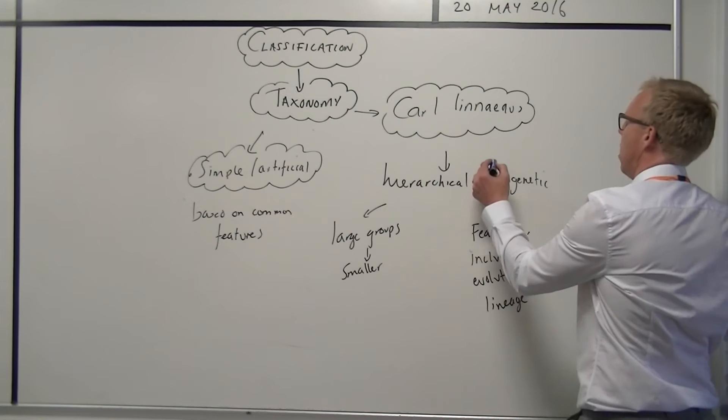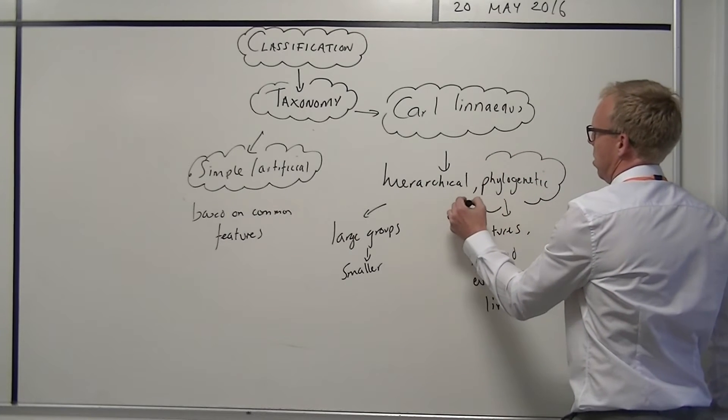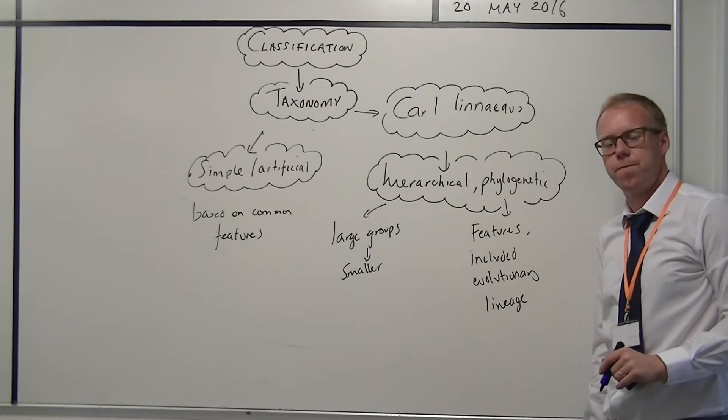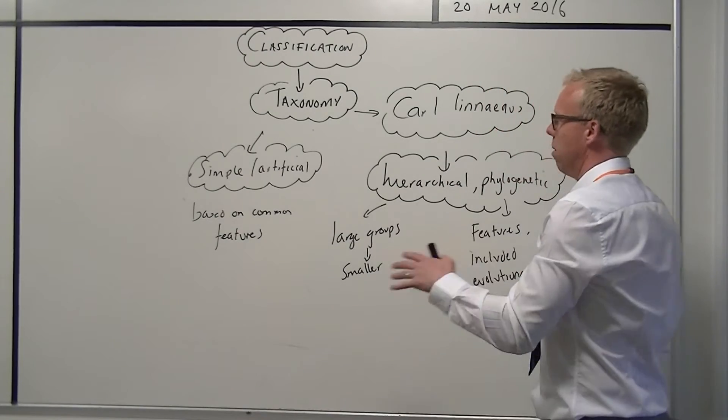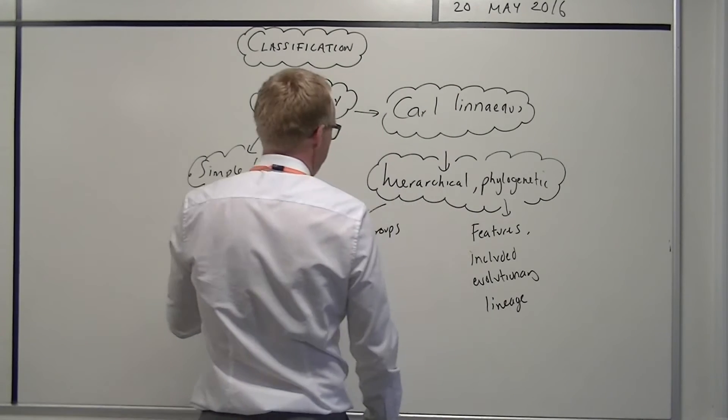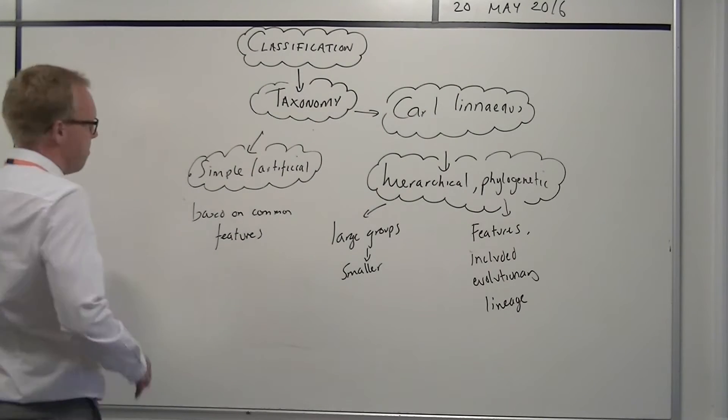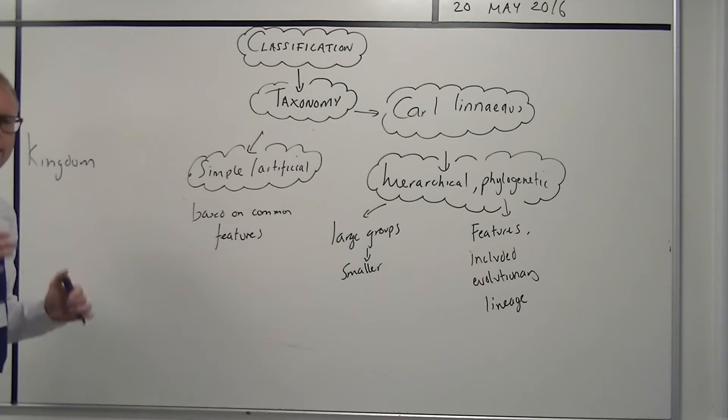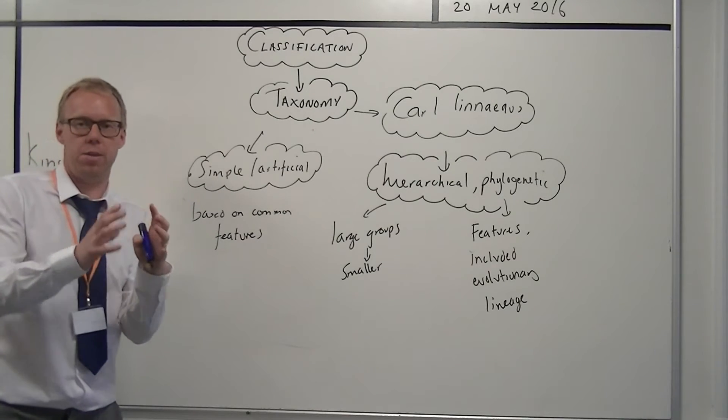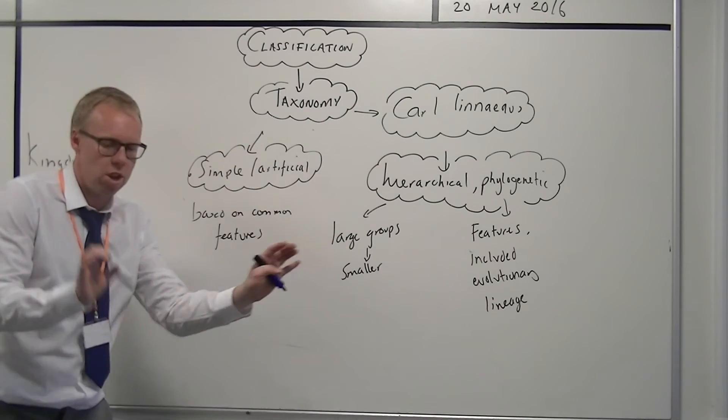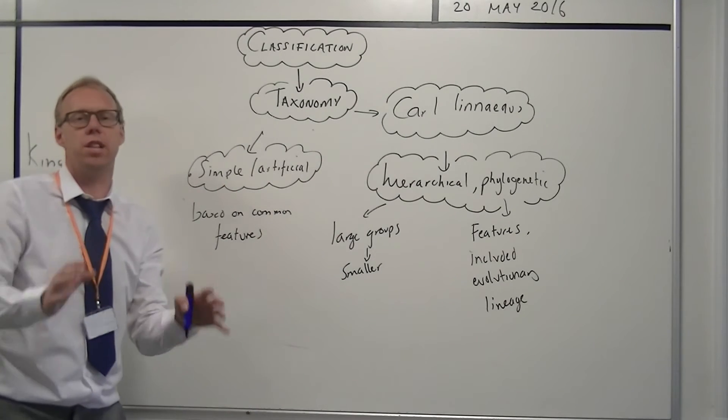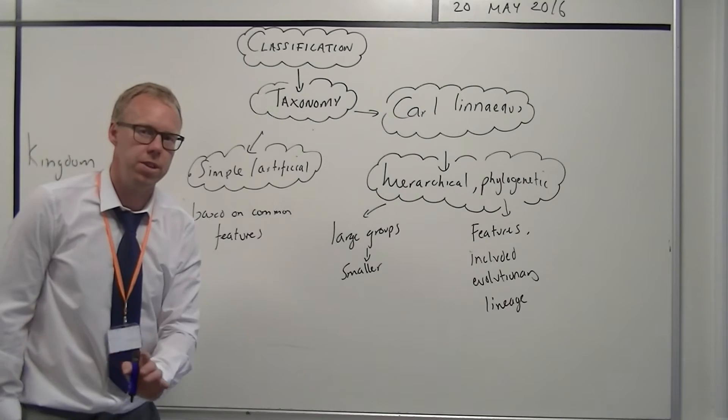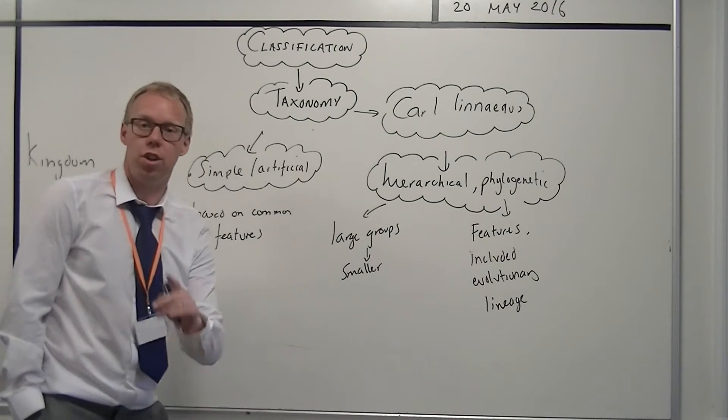Carl Linnaeus used this phylogenetic method, which was hierarchical to classify organisms. Now in doing so he came up with a system which we still use today. This system begins with kingdom, and every organism begins with its kingdom that it's placed into, and then we begin to place each organism into smaller groups, until we get the whole classification of the organism. Each set of groups, each new group that's formed is called a taxon, and the taxons in hierarchical order go like this.